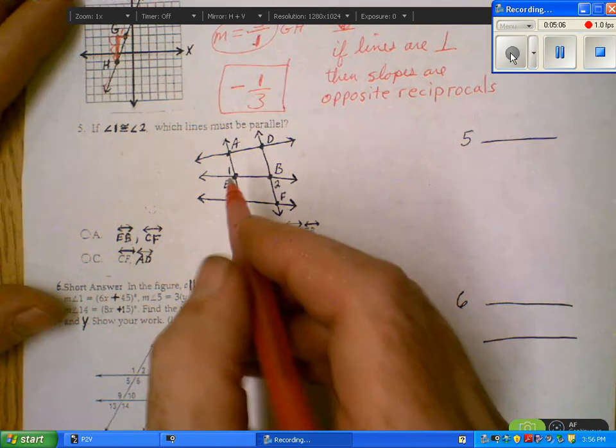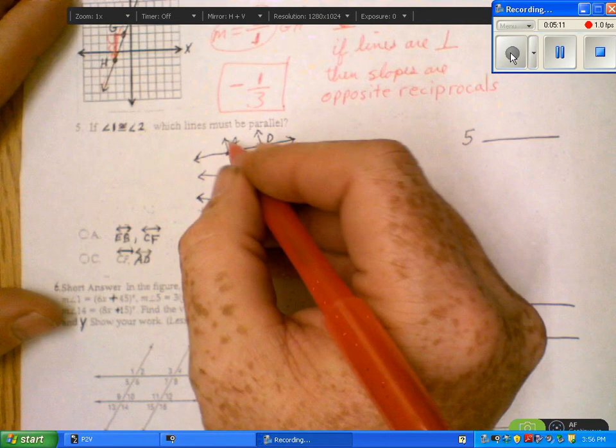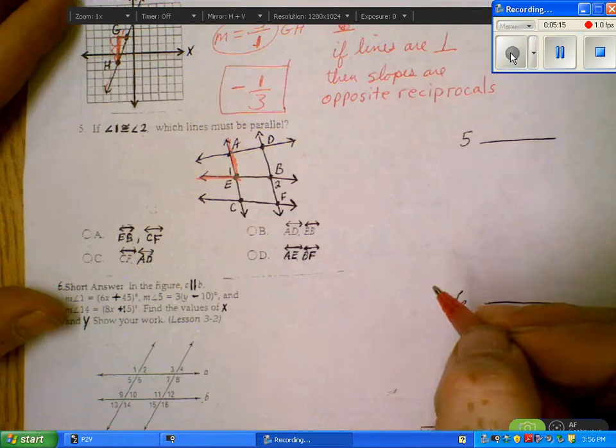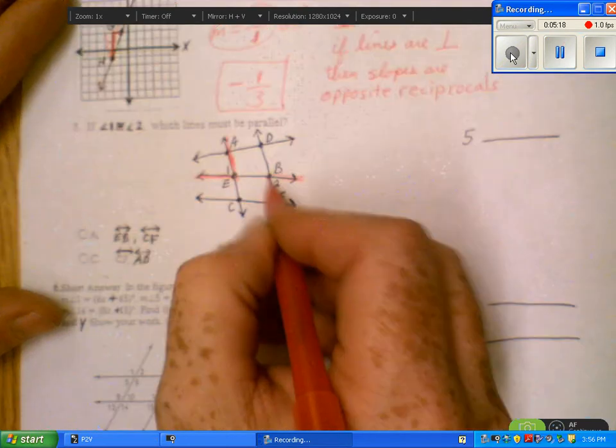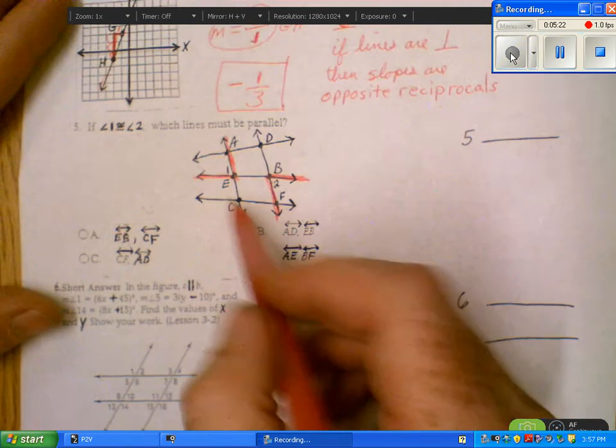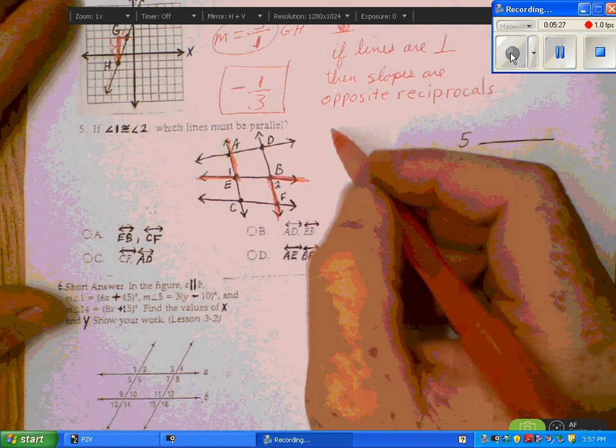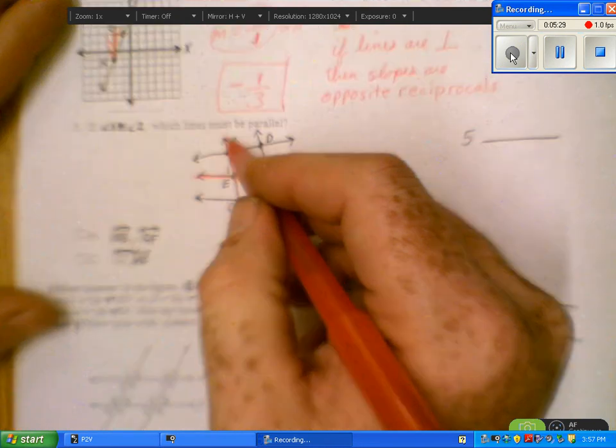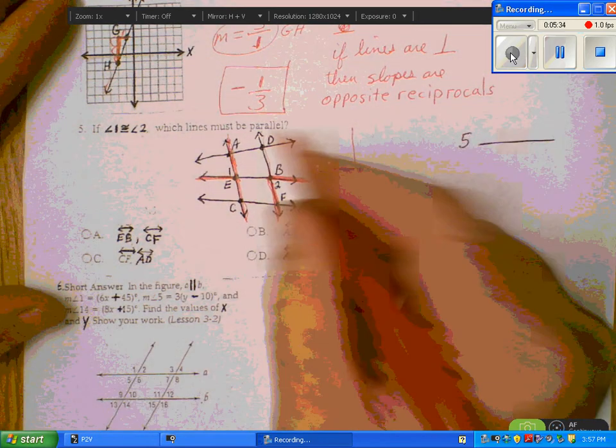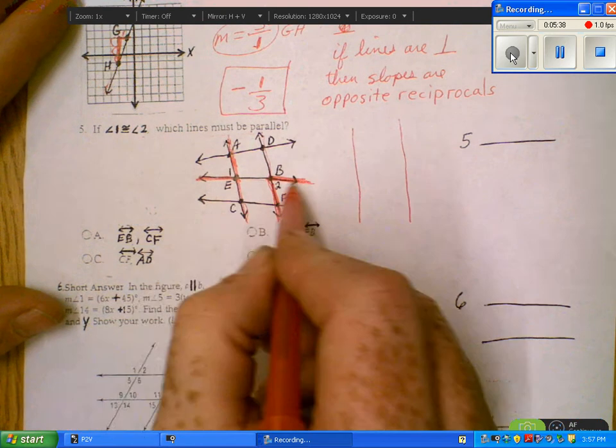For five, angle 1 and 2 are given. Which lines must be parallel? Angle 1 is right here and angle 2 is right here. Remember you want just the three lines to help you there to make up those two angles. One of them is this line, the other one is this line, then our transversal would be across through there.